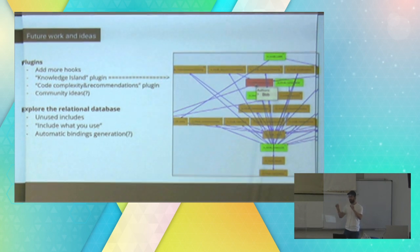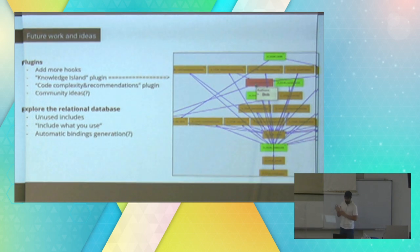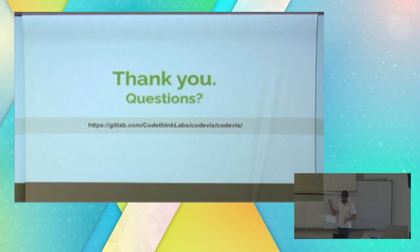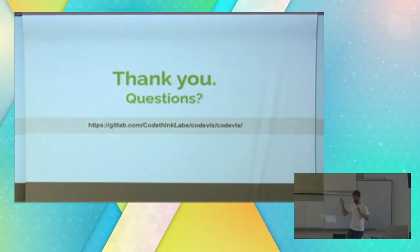Automatic binding generation: since you have a relational database representation of your code base, that means you have a table in a database filled with all your classes. You can iterate over all those classes and generate, for instance, Python bindings — or anything else you like — going through all the classes, inspecting which methods they have, and creating whatever you want from that information. Bindings is just one example.